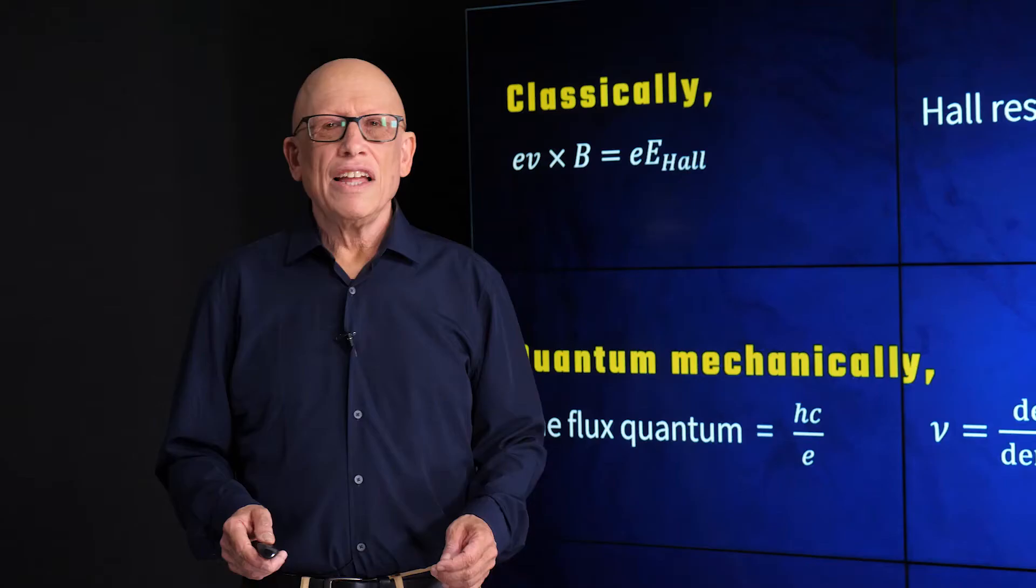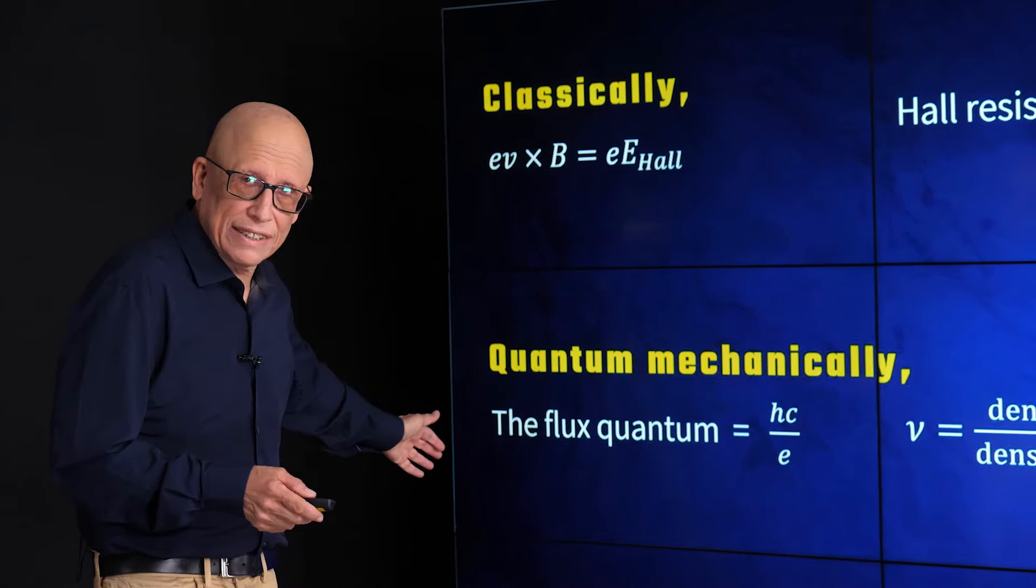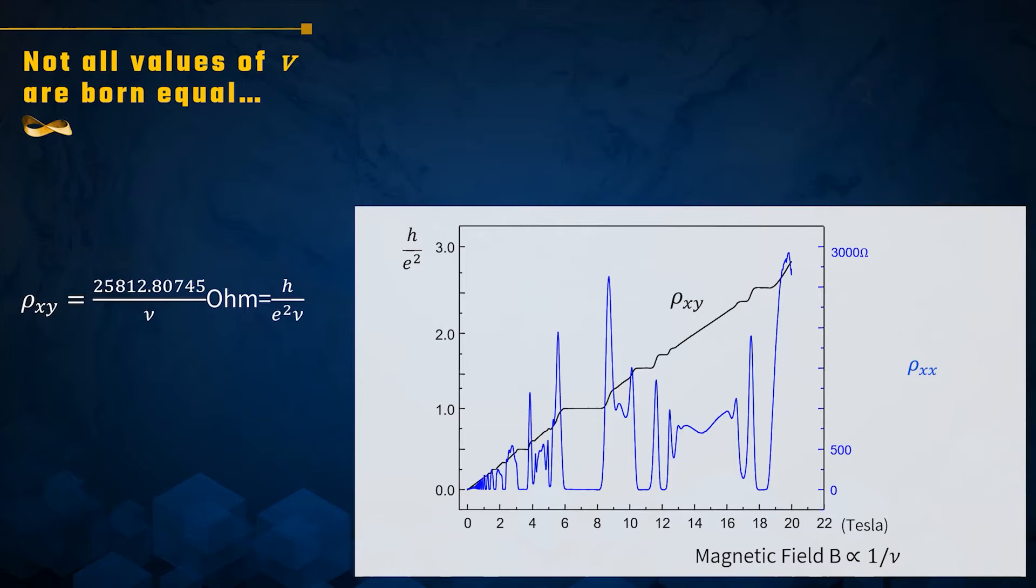We could rewrite our expectation for the Hall resistivity in terms of this dimensionless number nu. And nu is a continuous number proportional to 1 over b. So we could formulate our classical expectation for the Hall resistivity as being proportional to 1 over nu. Now let's see the experiment.